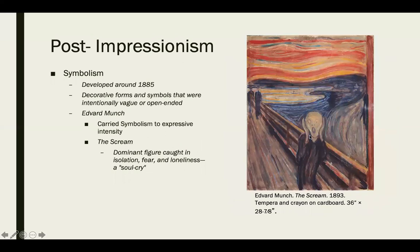Symbolism developed around 1885 from Post-Impressionism, using decorative forms and symbols that were intentionally vague or open-ended. Edvard Munch, who painted 'The Scream,' carried symbolism to expressive intensity. The dominant figure conveys isolation, fear, and loneliness — we don't really know why they're screaming. The color is very intense, the figures approaching in the background lead us to think they may be connected, and some theorize the sky is on fire. It's very open-ended and open for interpretation.